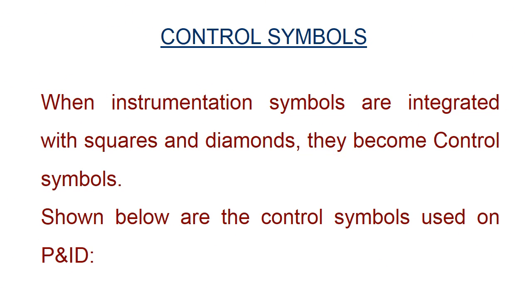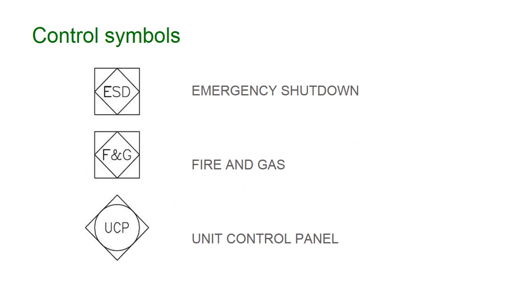When instrumentation symbols are integrated with squares and diamonds, they become control symbols. Shown below are the control symbols used on the P&ID: emergency shutdown, fire and gas, and unit control panel.